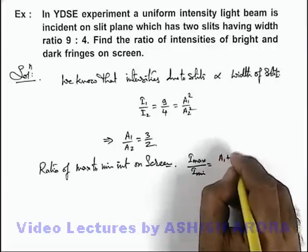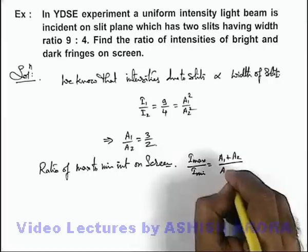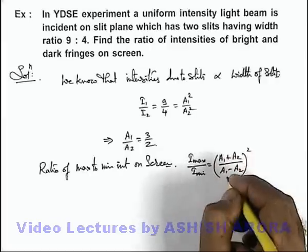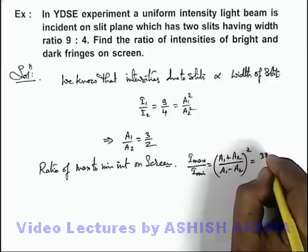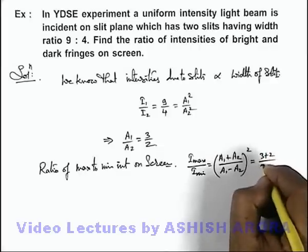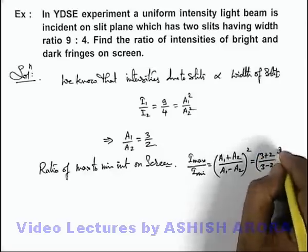(A₁ plus A₂) by (A₁ minus A₂) whole square. And if we substitute the values, this we can see will give us (3 plus 2) by (3 minus 2) whole square.